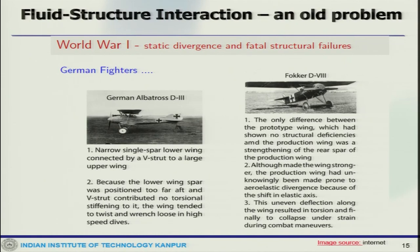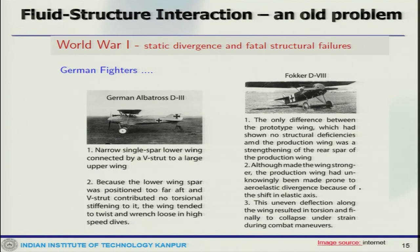On one hand we have the engine, and on the other hand we have the total aircraft, which has many other things to be considered — wing failures, fuselage failures. There was also a fatal structural failure: for the German Fokker D8, the only difference between the prototype wing and the production wing was a strengthening of the rear spar. Although this made the wing stronger, the production wing had unknowingly been made prone to aeroelastic divergence because of a shift in the elastic axis, resulting in torsional collapse under combat maneuvering strain.